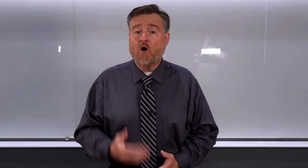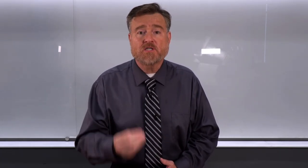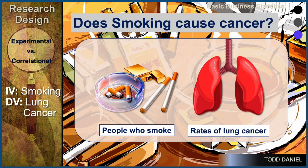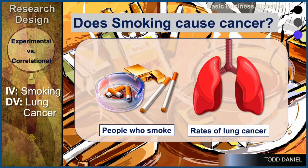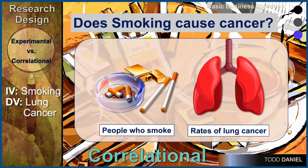Therefore, we would take a different approach to doing this kind of research. To answer the question of whether smoking causes cancer, what we would do is look for people who have already self-selected into the smoking group. We find people who already smoke and keep track of their level of lung cancer. If we find that people who smoke have more lung cancer than people who do not smoke, what type of research design would this be? This is an example of correlational research design.